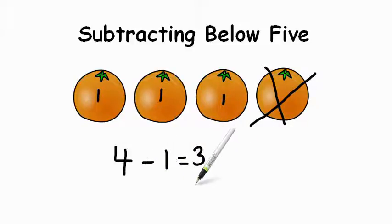We've written a number sentence that shows the answer of 3. We had 4 to begin with: 1, 2, 3, 4. We removed 1, and now we have 3 oranges left.